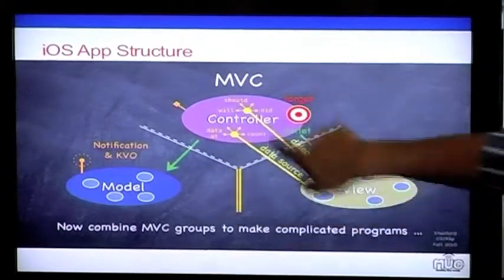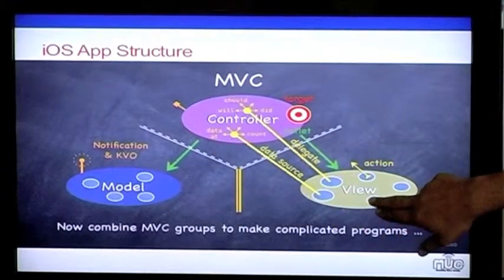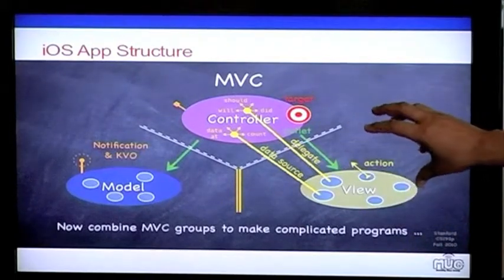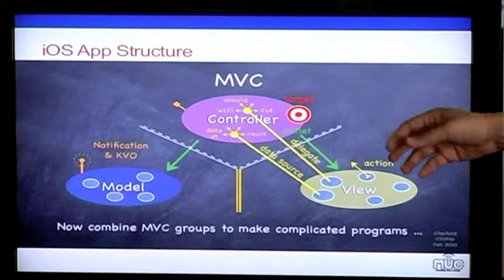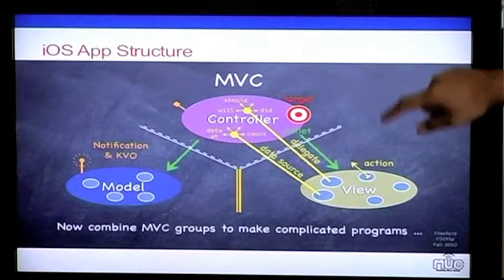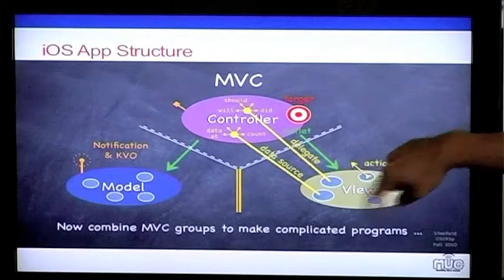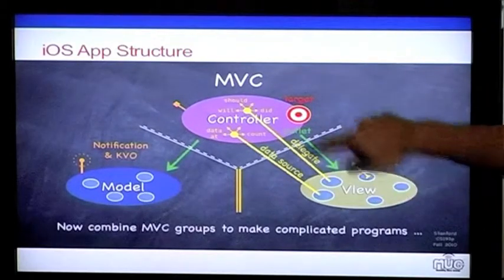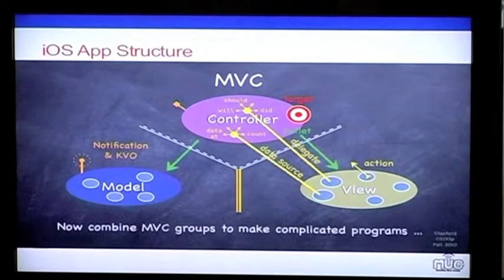Whenever something changes in the model, it has a few components which are tuned into the model. It is more like the controllers are tuned in to this station, and whenever something changes in the model, the controller will get notified and it will refresh the view. But the model is never going to make a call directly to the controller or any component of the controller or function of the controller. So please have that demarcation. This block line is really meant for you cannot talk to each other. It is blocked access.